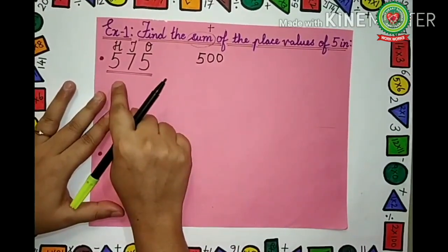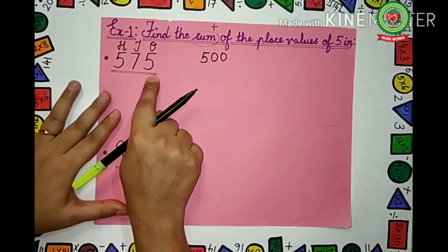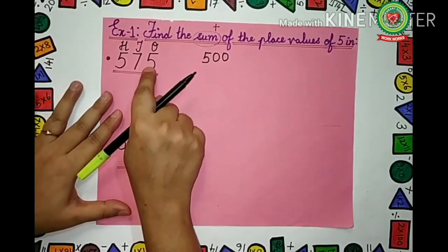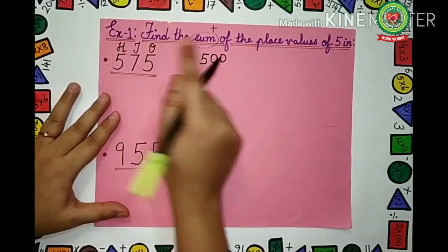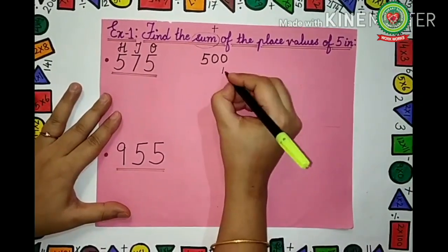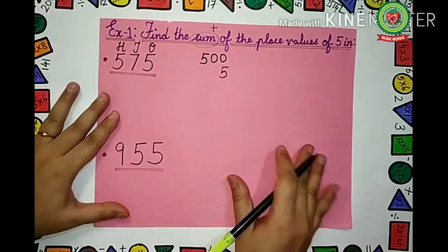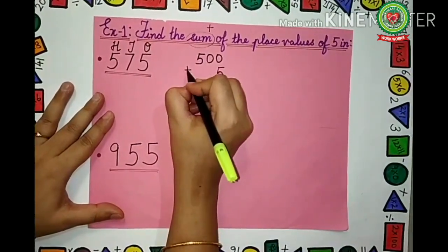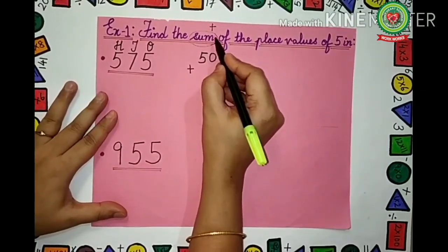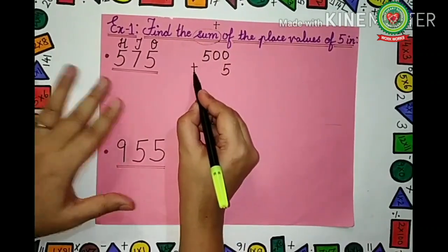Where is the other 5? The other 5 is below 1's. 1's has no zero. 5 is in the 1's place, so we will write 5 in the 1's place as just 5. Now we will put a plus sign, because the question says sum, which means we have to do plus. So we have written plus.